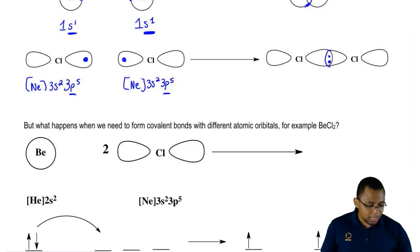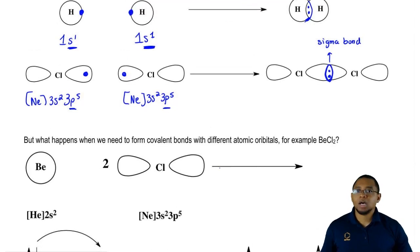Here is where they form their bond. This is a direct overlapping of their atomic orbitals. We say this is called a sigma bond. A sigma bond is the direct overlapping of atomic orbitals. They share electrons with each other to complete their octet to be just like the closest noble gas.